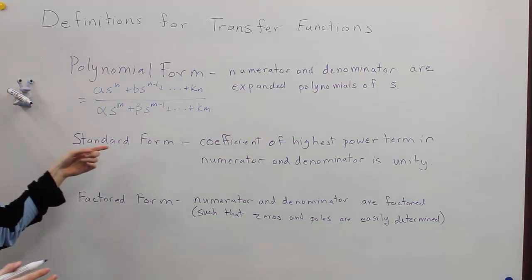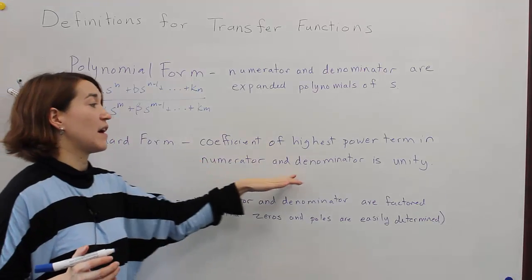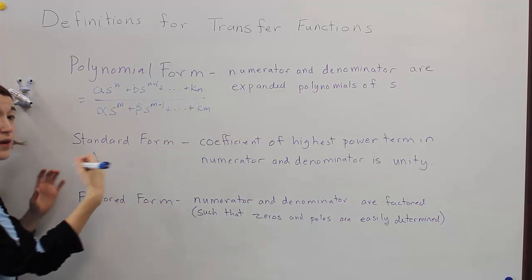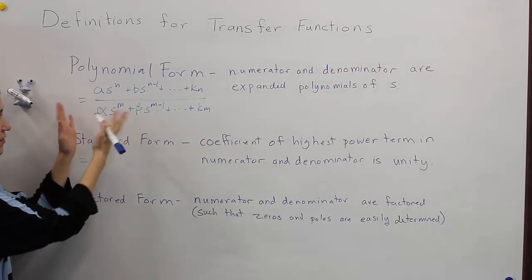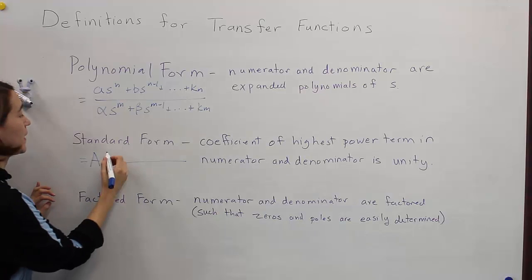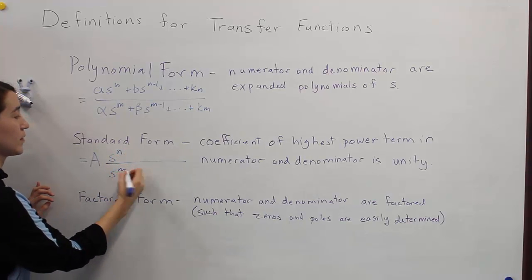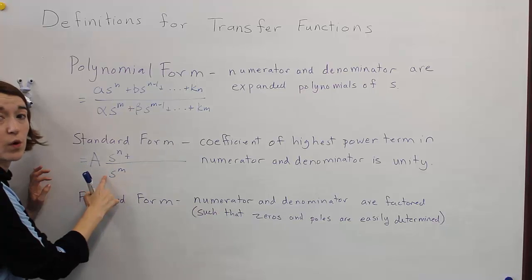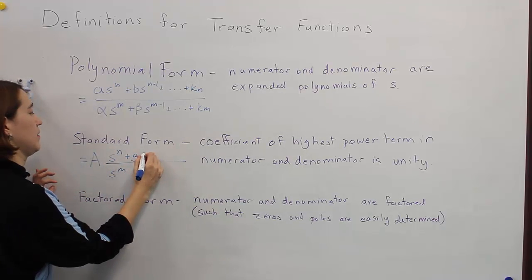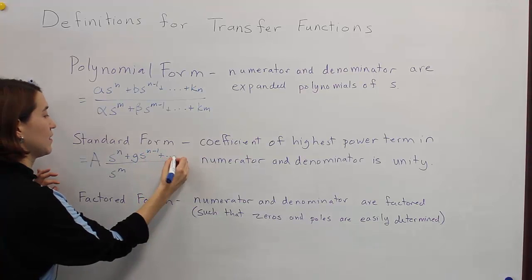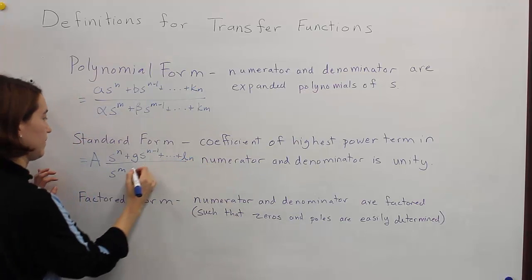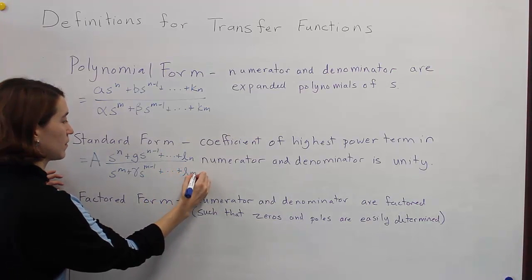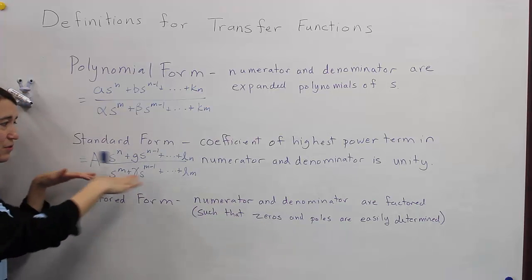Standard form requires that the coefficient of the highest power term in both the numerator and denominator is unity — equal to one. You can have a factor out front, but the key is that the Sⁿ and Sᵐ terms have coefficient 1. The remaining terms follow in descending order, like gamma·S^(m−1) down to the constant.